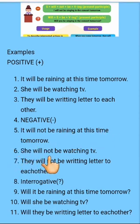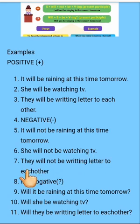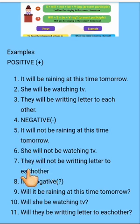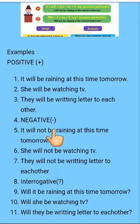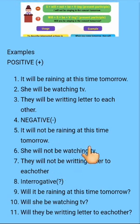She will not be watching TV. They will not be writing letter to each other. Dekho, sari subject ha. According to rule, will aajayega, then not aajayega because these are the negative sentences. Then ashi be use karangi, verb di first form de naal ing use karangi.